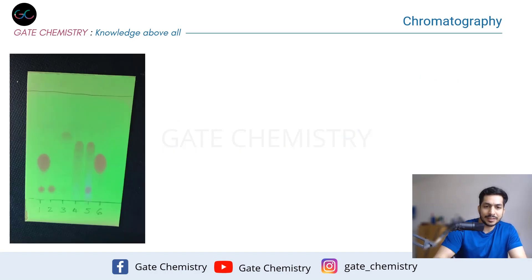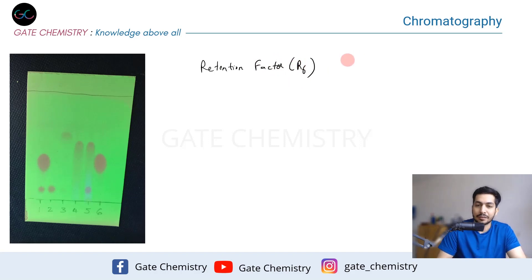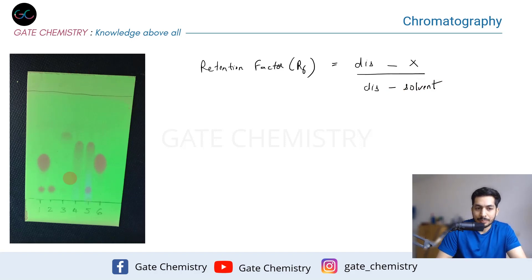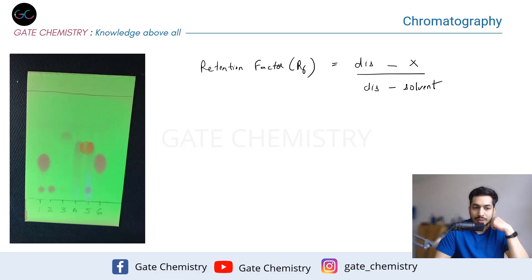The retention factor — more commonly called the Rf value — is calculated by a simple formula: Rf = distance traveled by the compound divided by distance traveled by the solvent. This is a live example of how a thin layer chromatography plate looks. You generally observe it under some detection medium.